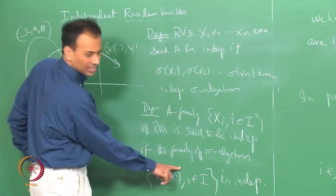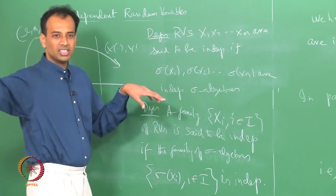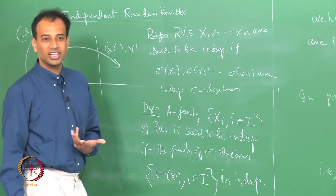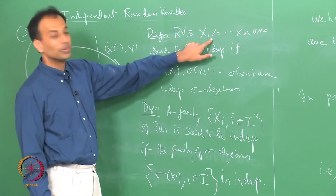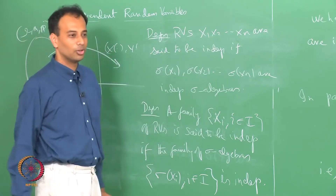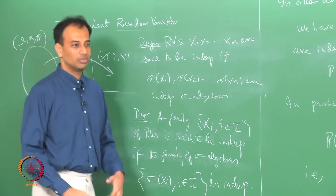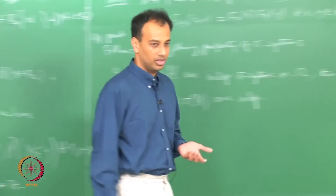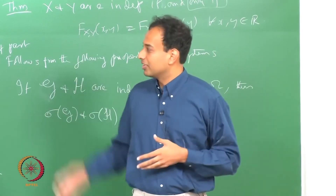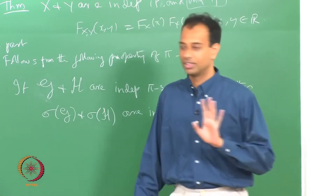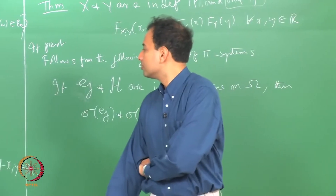What does that mean? A family fi of sigma algebras is independent if you pick any event you want from each of these, that family of events must be independent. This is a very elegant way of treating the whole matter: you give me any collection of random variables, I define it to be an independent collection if the corresponding collection of sigma algebras they generate is independent. You don't have to give different definitions for finite family, infinite family — you can just finish it in one framework.